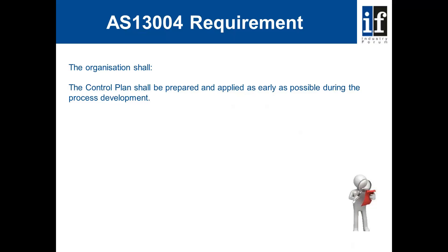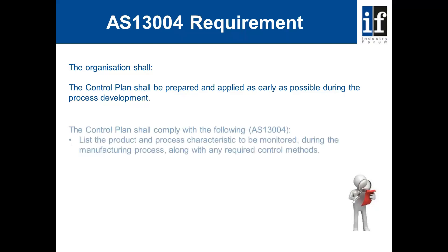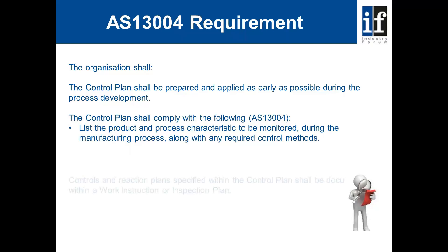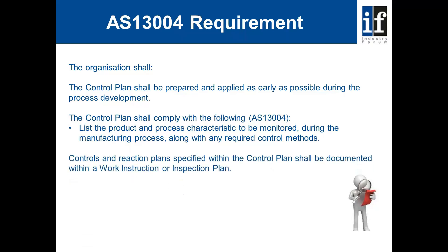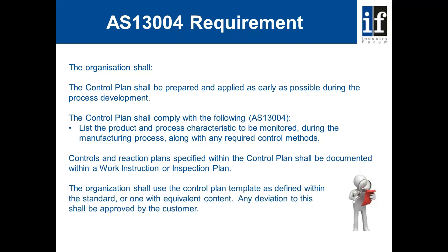Going back to AS-13004 requirements, the organization shall have a control plan, which will be applied as early as possible during the process development. The control plan shall comply with the AS-13004 requirement to list the product and process characteristics to be monitored during the manufacturing process, along with any required control methods. Controls and reaction plans specified within the control plan shall be documented with a work instruction or an inspection plan. The organization shall use the control plan template as defined within the standard, or one with equivalent content. Any deviation from this shall be approved by the customer.